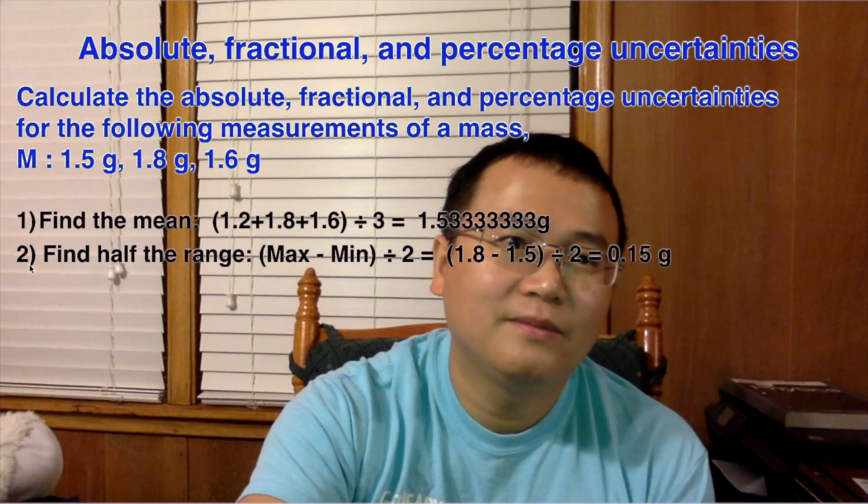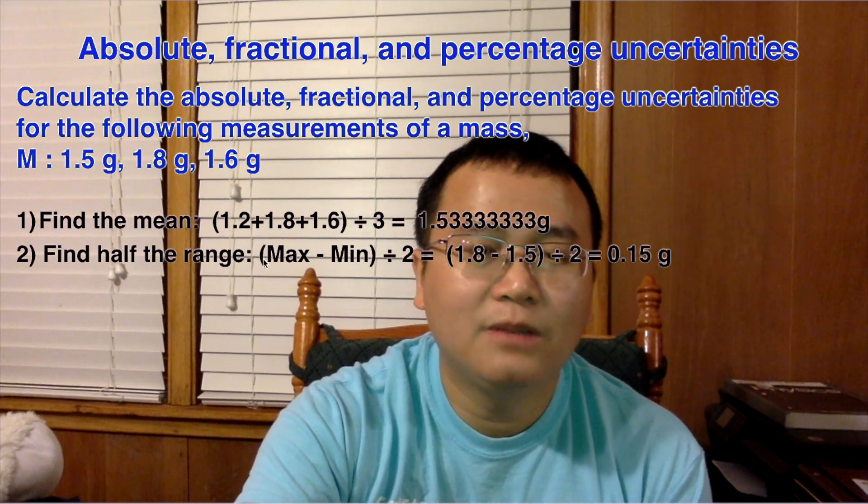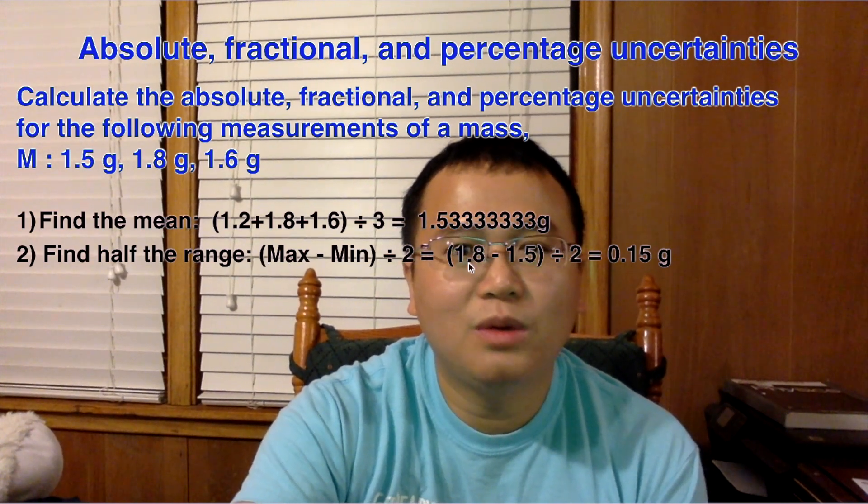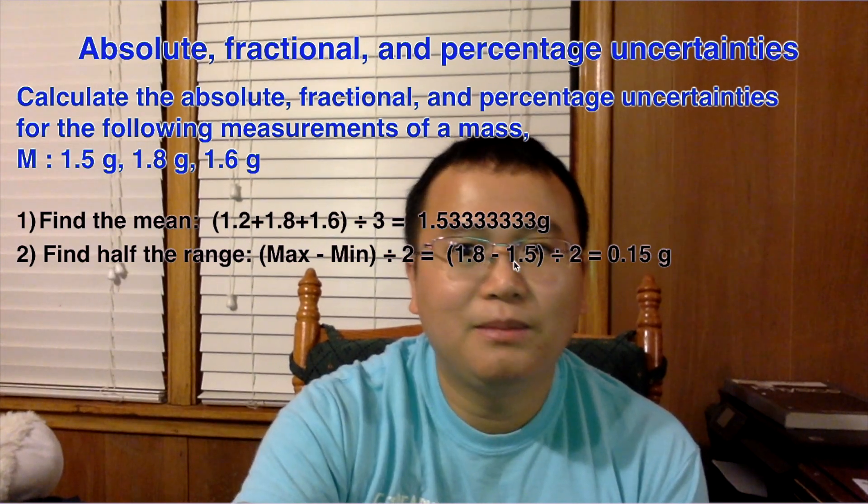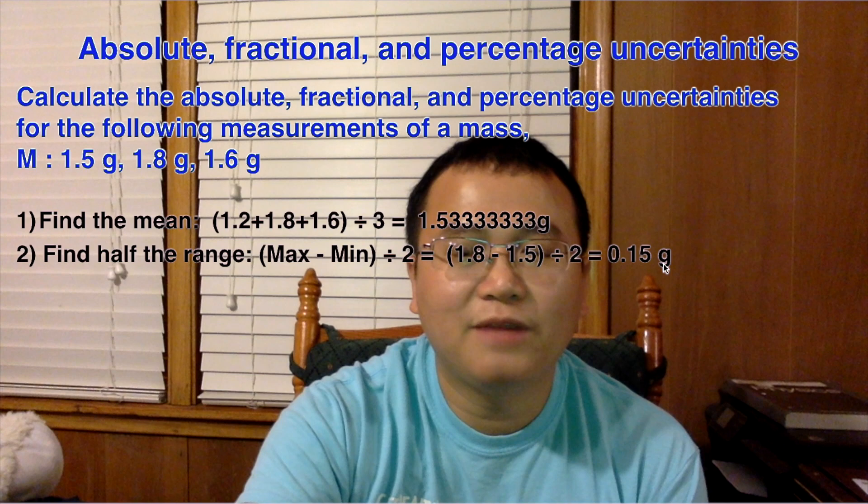The second thing we need to do is find half the range. So we take the max minus the min divided by 2. So 1.8 is the max minus 1.5 is the min, divide by 2, that will give us 0.15 grams.